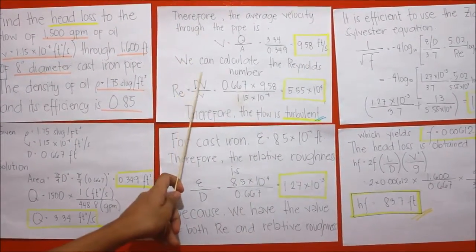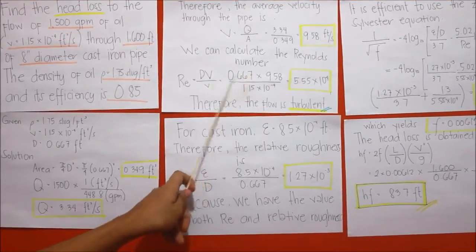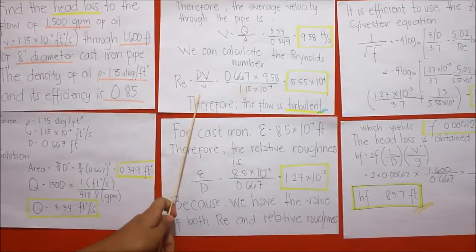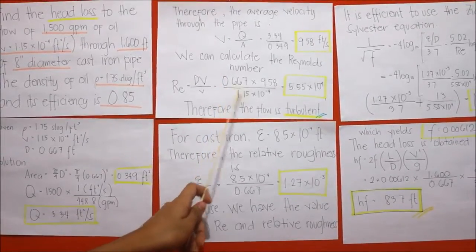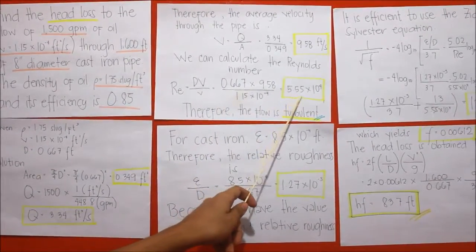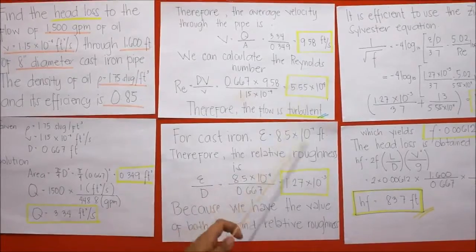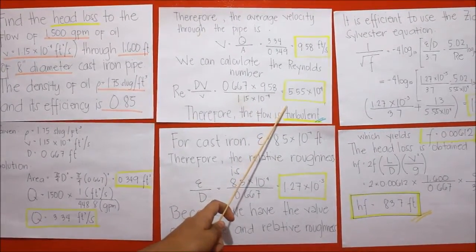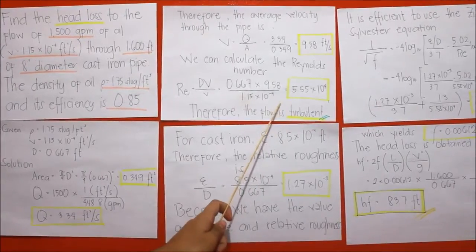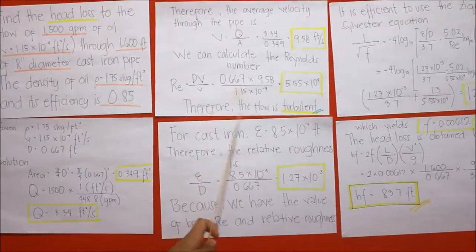Now, we can calculate the Reynolds number where Re equals dV over V. Simply plug in the given to the formula and come up with the answer of 5.55 times 10 to the power of 4. Our Reynolds number is more than 2,000. If the Reynolds number is more than 2,000, therefore, the flow is turbulent.